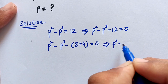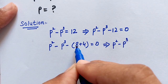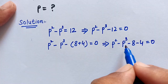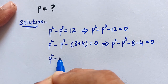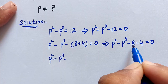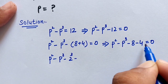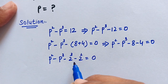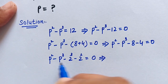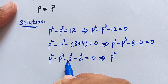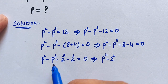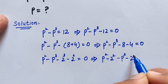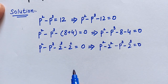So we rewrite as p squared minus p to the power of 3 minus 8 minus 4, which is equal to 0. Here, 8 is equal to 2 to the power of 3, and 4 is equal to 2 squared. So we have p squared minus 2 squared minus p to the power of 3 minus 2 to the power of 3, which is equal to 0.